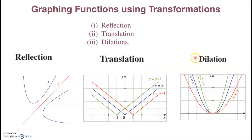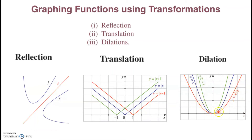For dilation, y = x² is the original curve (the blue one). y = 2x² is a curve compressed towards the y-axis away from the x-axis. Similarly, y = x²/2 is a dilation that is stretched far away from the y-axis towards the x-axis.